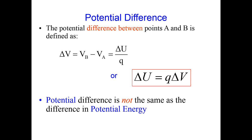This is very similar to the case of gravitational potential energy, where the potential energy is mgh. If we know the change in potential energy, then we can find the change in kinetic energy. We can then find the velocity of a charged particle after it has moved a certain distance through an electric field, assuming we know the mass of the particle.